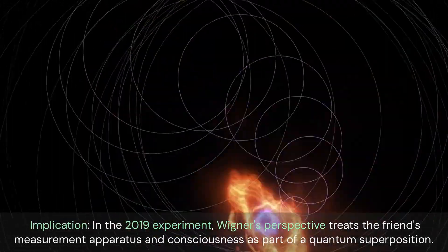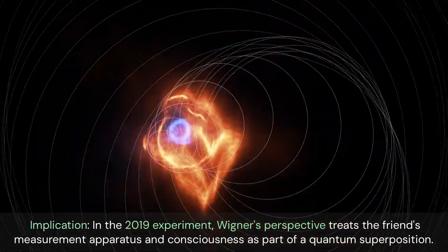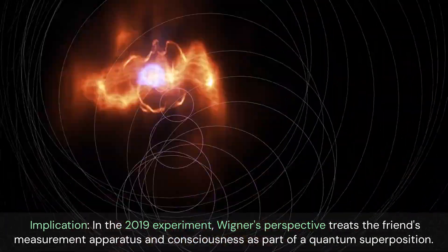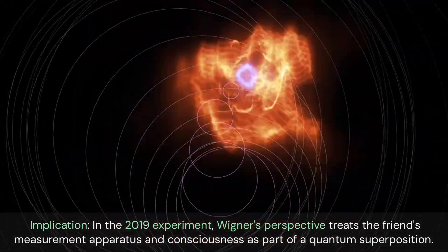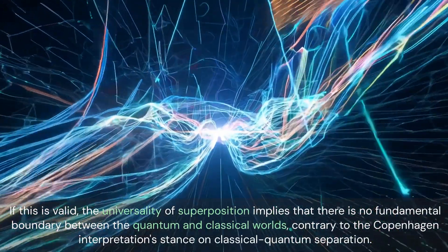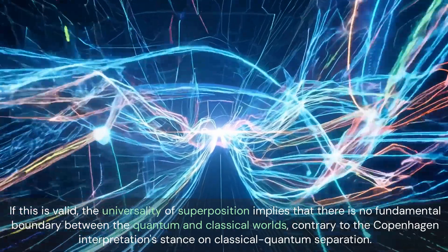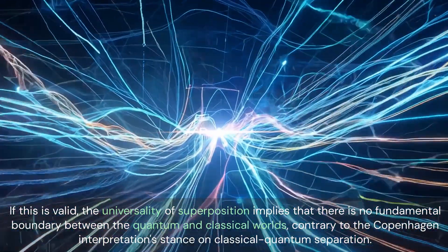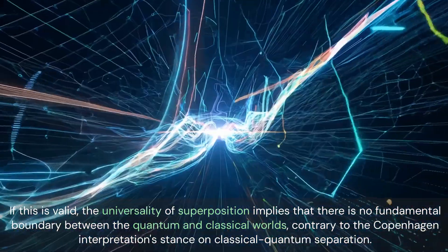Implication. In the 2019 experiment, Wigner's perspective treats the friend's measurement apparatus and consciousness as part of a quantum superposition. If this is valid, the universality of superposition implies that there is no fundamental boundary between the quantum and classical worlds, contrary to the Copenhagen interpretation's stance on classical quantum separation.